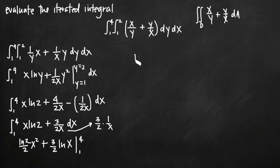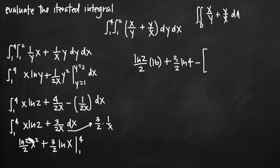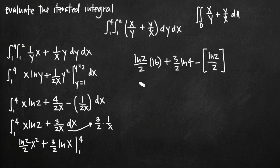Plugging in the upper limit x equals 4: natural log of 2 over 2 times 4 squared, which is 16, plus 3 halves times natural log of 4. Then we subtract the value at x equals 1: natural log of 2 over 2 times 1 squared gives natural log of 2 over 2, and 3 halves times natural log of 1 is 0, so that disappears. We have natural log of 2 over 2 times 16 minus natural log of 2 over 2 times 1, which gives 15 times natural log of 2 over 2.